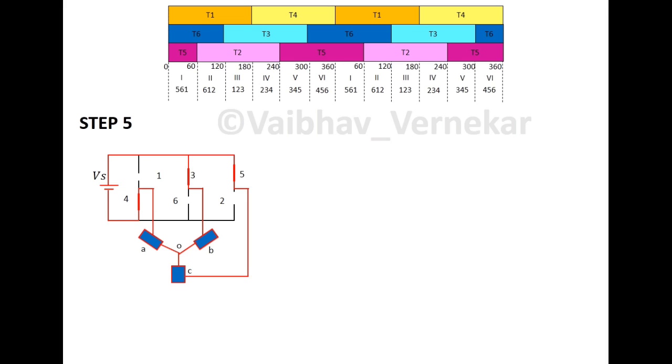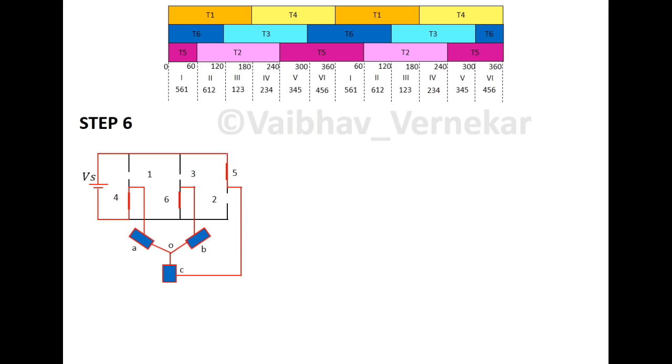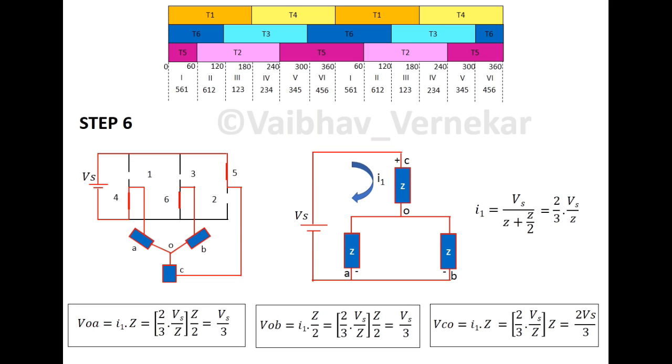In step 5, thyristors 3, 4, 5 work together and in step 6, thyristors 4, 5, 6 conduct together. It is seen that series load gets more voltage drop and parallel load gets lower voltage drop.